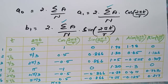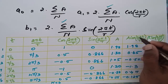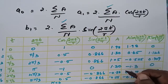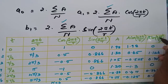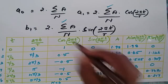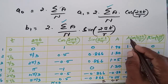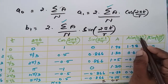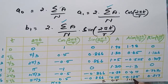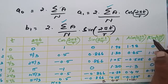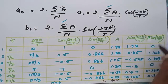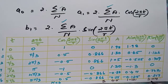The summations are: summation of a = 4.5, summation of a·cos(2πt/T) = 1.12, and summation of a·sin(2πt/T) = 3.014.